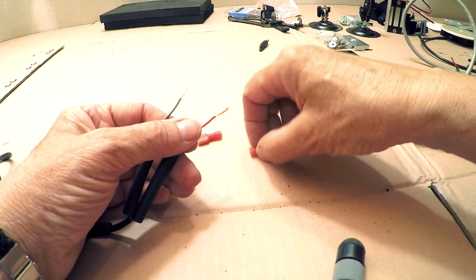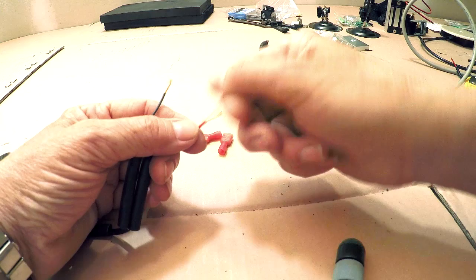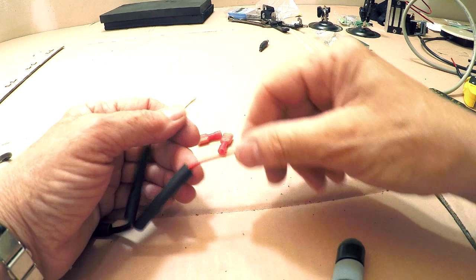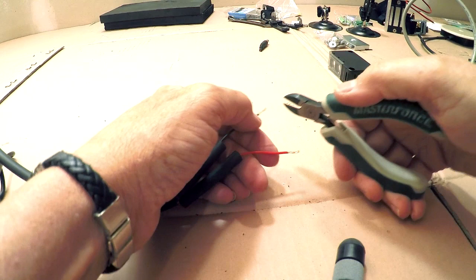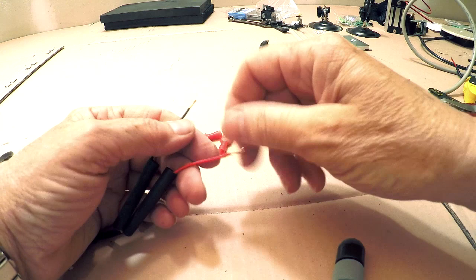Now the connectors we're using are these pink ones. These are smaller than the blue. These are 18 to 22 gauge connectors because these are very fine wires on this adapter. I'm just going to cut a little bit off here. So I like it about three-eighths of an inch long on the bare wires.